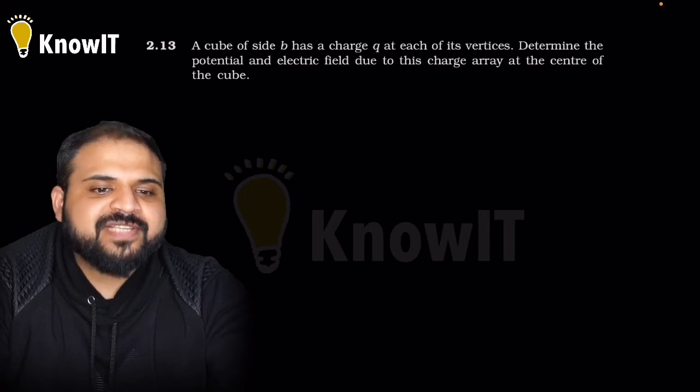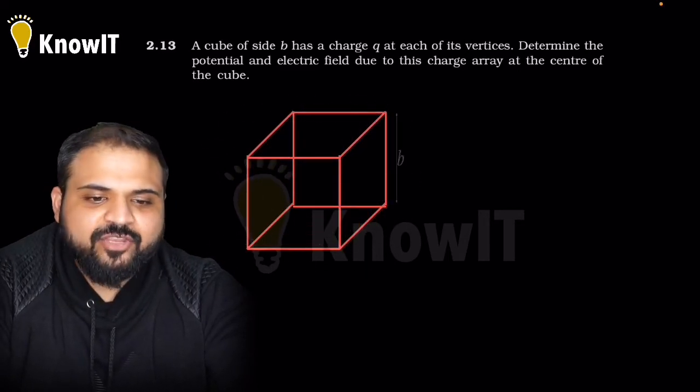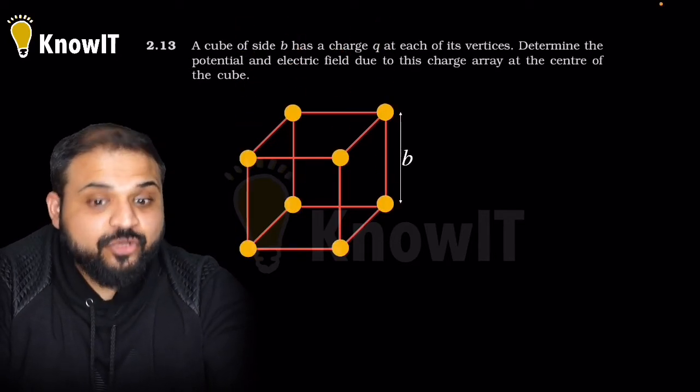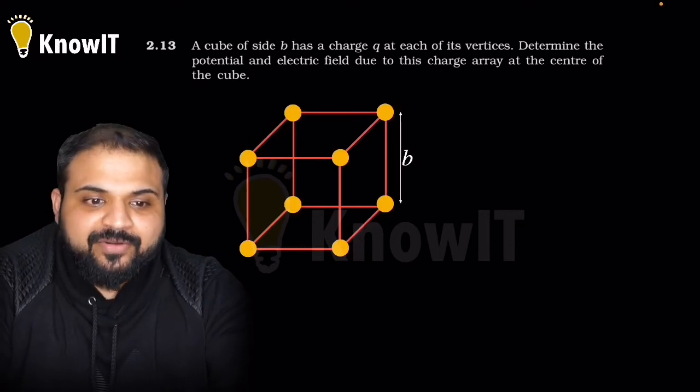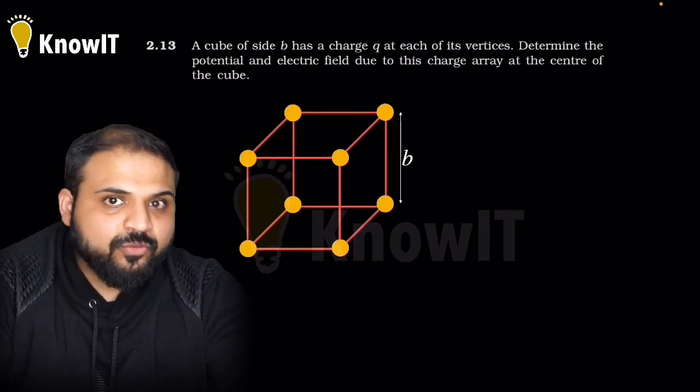I hope you understood this. Moving ahead to problem 2.13. A cube of side b has a charge q at each of its vertices. You can see this cube here - we've placed charges at all the vertices. The cube's size is b for each side.